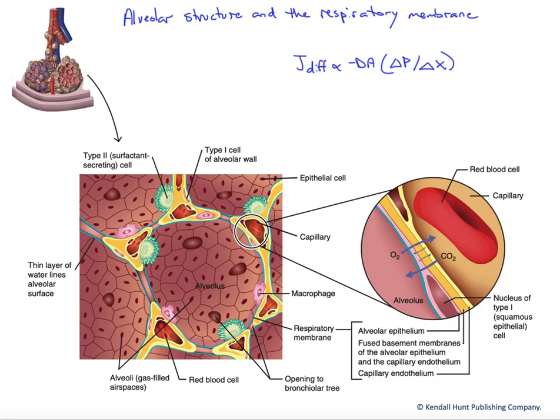In this figure, we want to look at alveolar structure and the respiratory membrane, and we want to focus on a couple of key factors. One would be protection against both airborne particulate matter as well as protection against collapse. We don't want our alveoli to collapse every time we exhale.